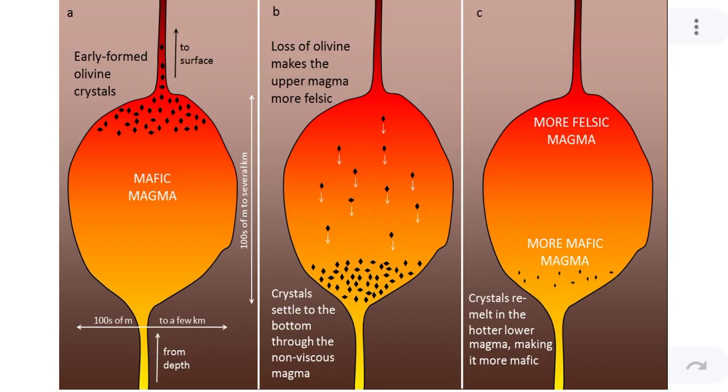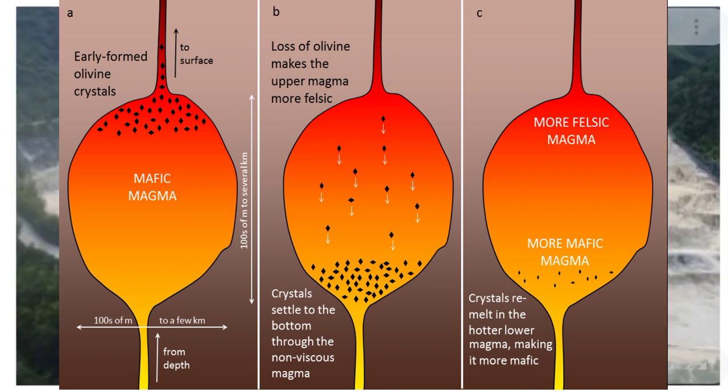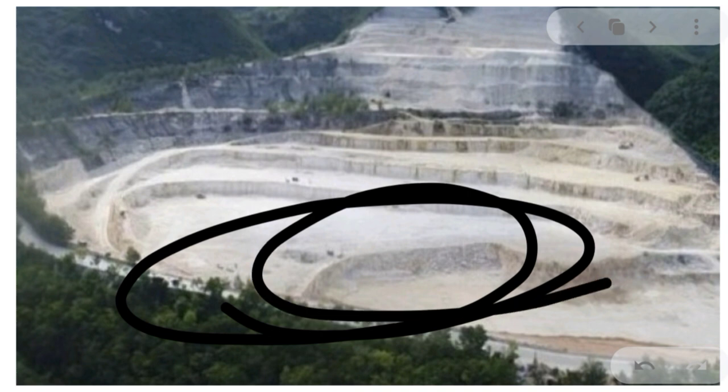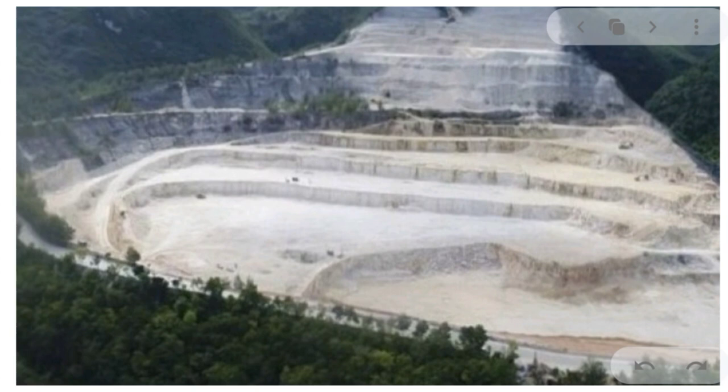Now let us talk about mineral resources — where they are usually obtained. Minerals can be obtained or formed in magma. When a volcano erupts, magma becomes lava and solidifies, and those solidified rocks contain crystals — mostly quartz. Minerals are also obtained through mining, such as the dolomite mined in Cebu and placed at the Manila Bay Baywalk, where the mountain was flattened.